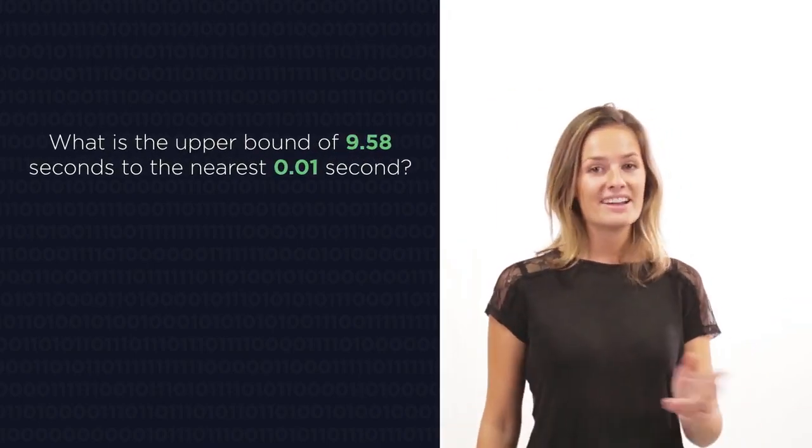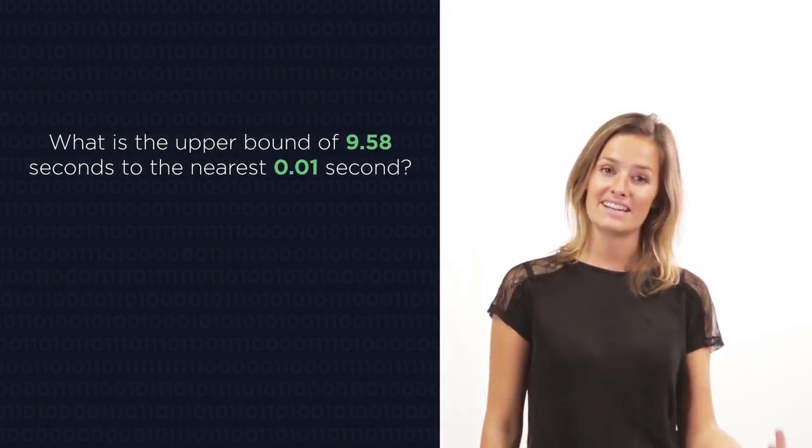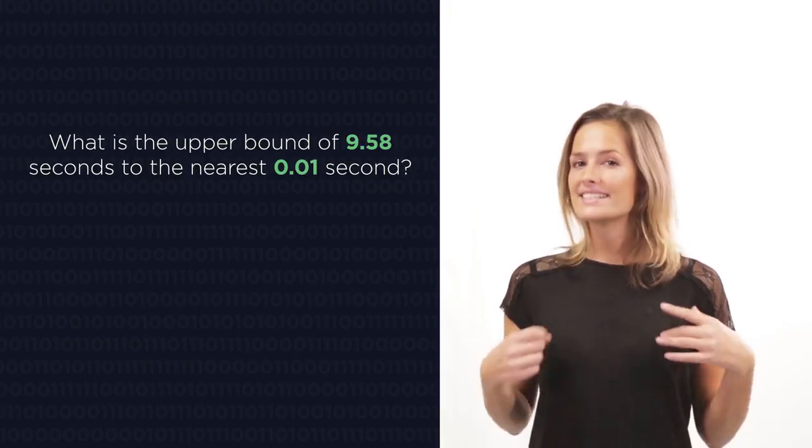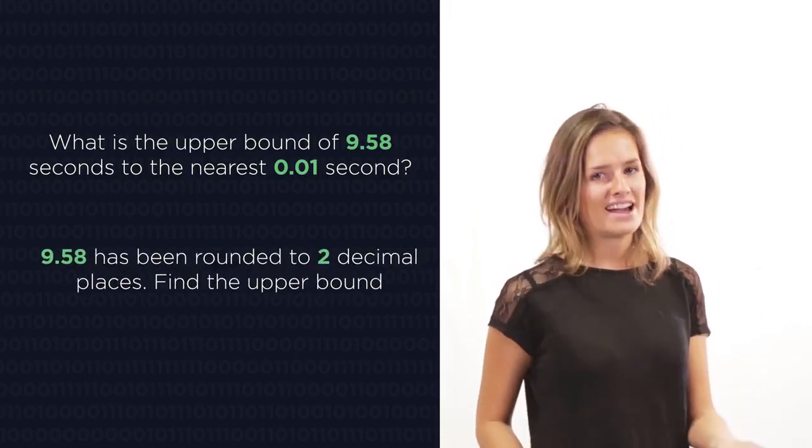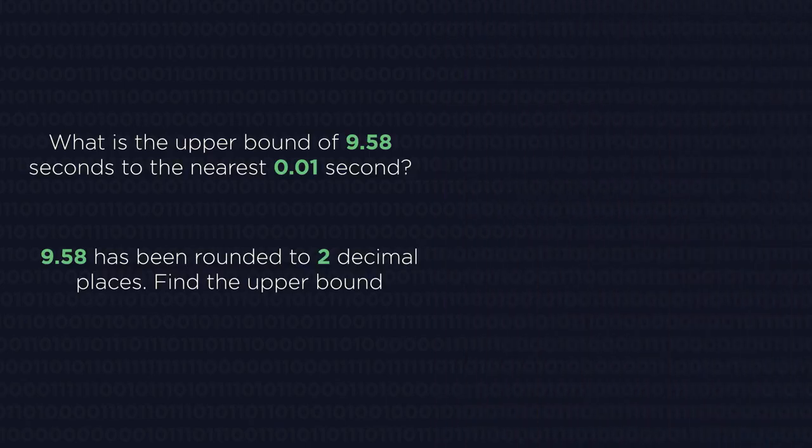What is the upper bound of 9.58 seconds to the nearest 0.01 seconds is exactly the same as asking: 9.58 has been rounded to two decimal places. What is the upper bound?